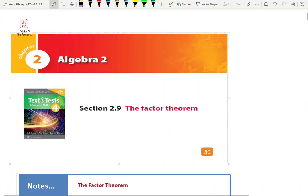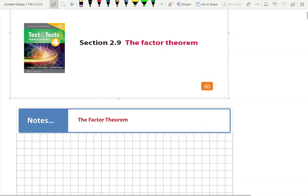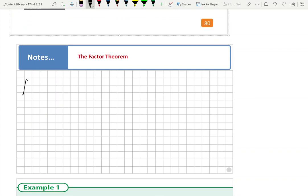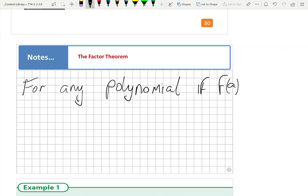We'll state it in writing now. You should have a pen in hand and you should be writing the factor theorem as follows: For any polynomial, if f(a) equals zero - now that's very important, that if condition is true - then x minus a is a factor.